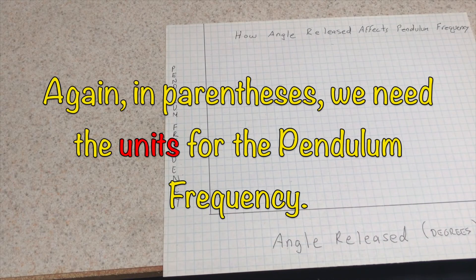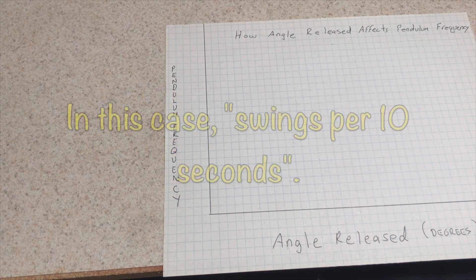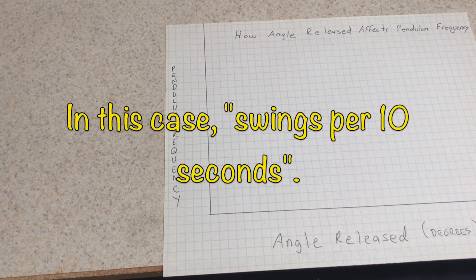And again, in parentheses, we need the units for the average frequency. In this case, swings per 10 seconds.